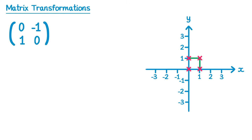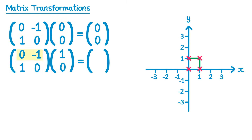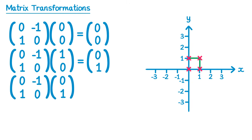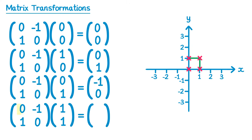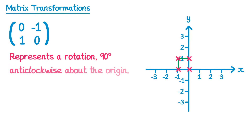We also have the matrix [0 -1; 1 0]. Point (0,0) gives (0,0). Point (1,0) gives (0,1). Point (0,1) gives (-1,0). Point (1,1) gives (-1,1). This time the shape turns in the other direction — so this matrix represents a rotation, 90 degrees anti-clockwise, about the origin.